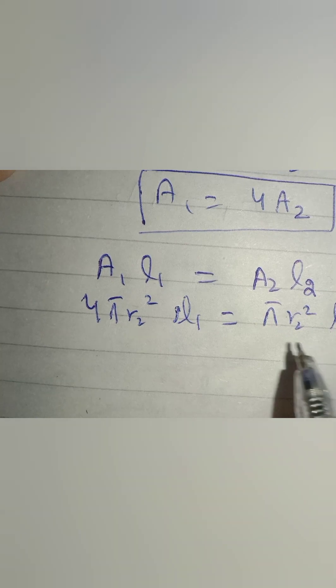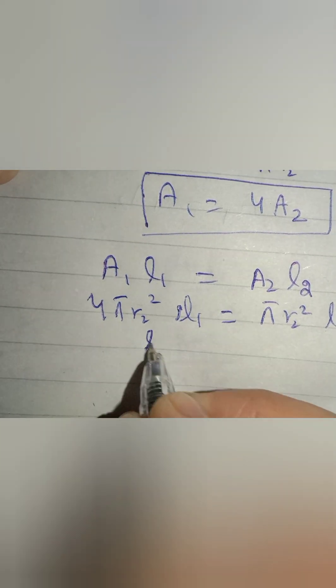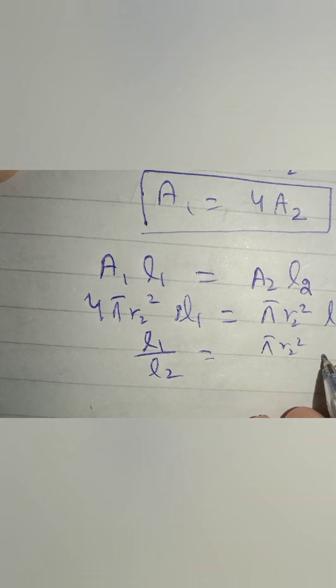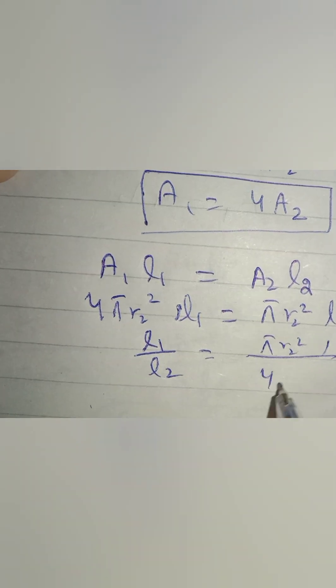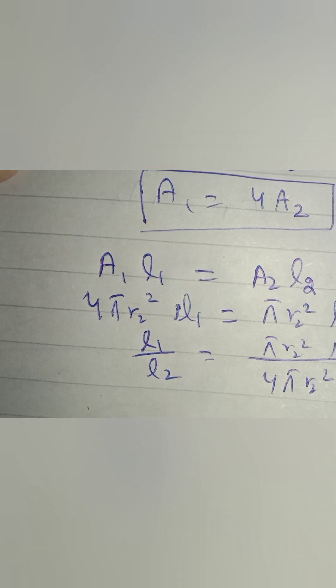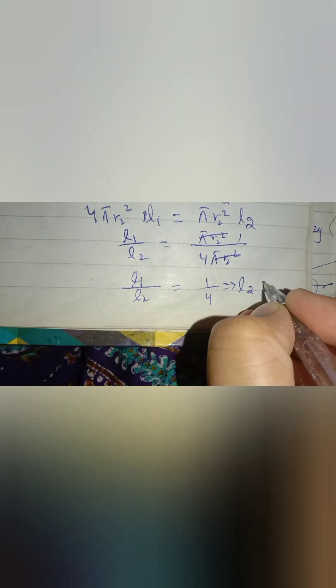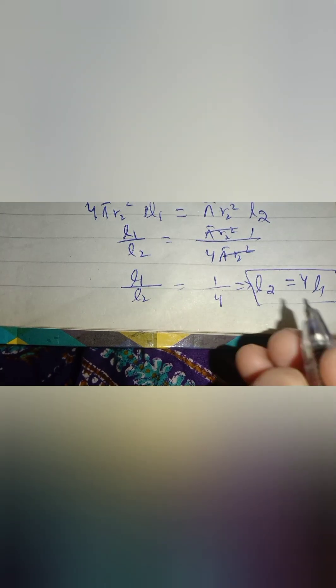Take L1 and L2 on the left-hand side and all other values on the right-hand side. So we get L1 over L2 equals 4π r2 squared divided by π r2 squared. In numerator and denominator gets cancelled, so we are left with L1 over L2 equals 1 over 4. We can also write that L2 is 4L1, and we call it equation number 3.